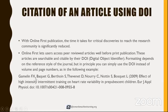For example: Gambling F.X., Beckert G. — these are the names of the authors — followed by their topic: 'Effect of High Intensity Intermittent Training on Heart Rate Variability in Children.' Then it assigns a DOI: 10.1007/s00 — this is the unique identity assigned to your article.